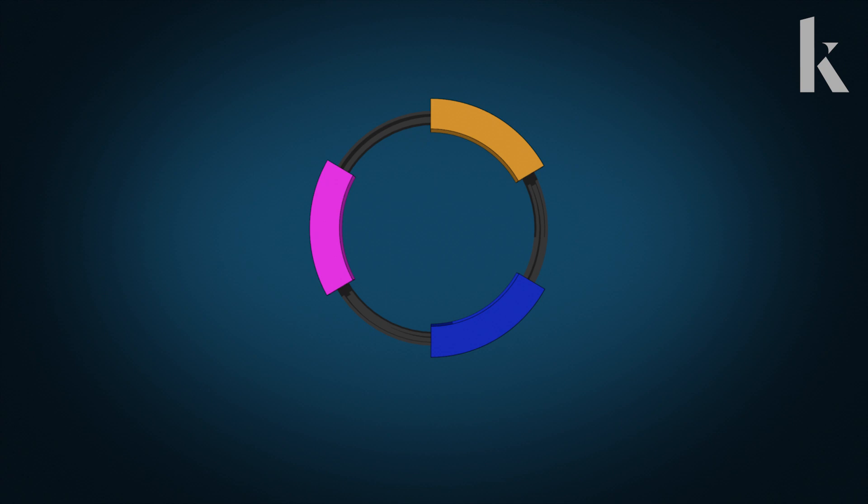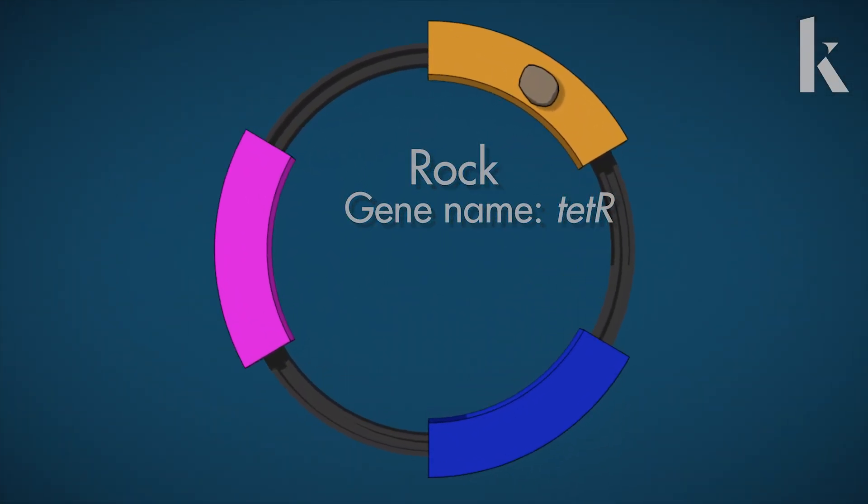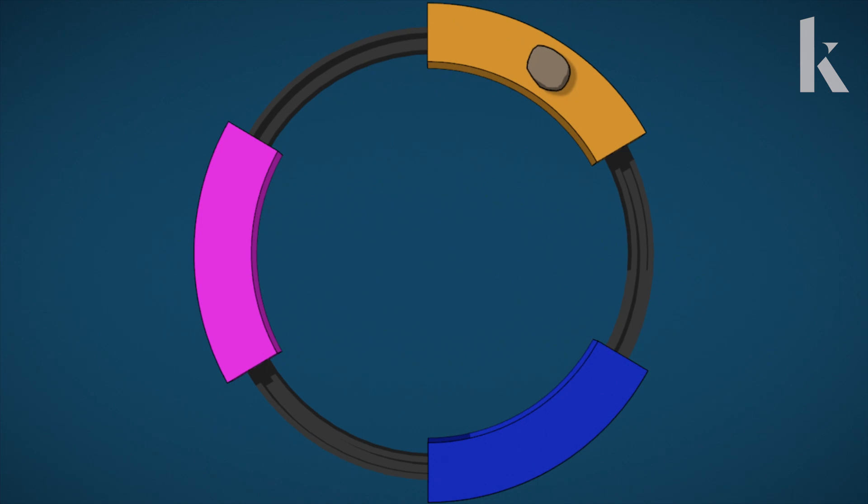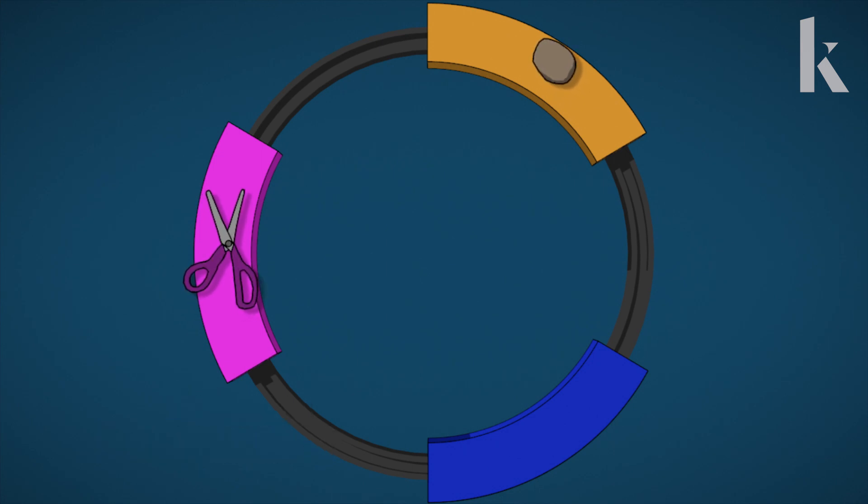So when gene number one, we'll call it rock, is on, it starts generating a protein. That protein turns off gene number two. We'll call gene two, scissors. When the scissors gene is active, it generates a protein that turns off the third gene. We'll call it paper.